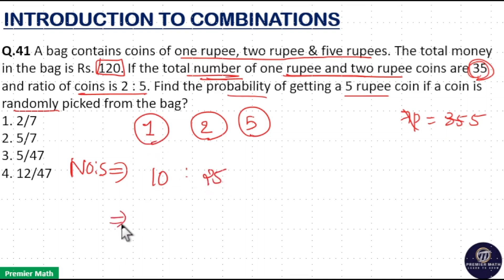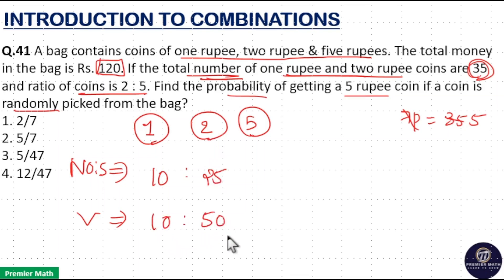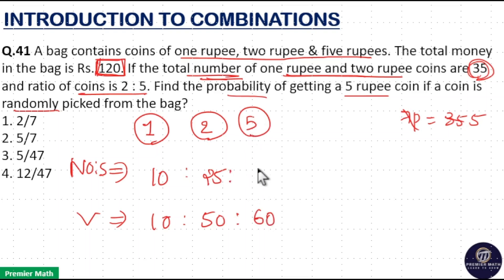Total number of one rupee coins is 10, so total value of one rupee coins is 1 × 10 = ₹10. Total value of two rupee coins is 2 × 25 = ₹50. So 10 plus 50 is ₹60, but there is a total of ₹120 in the bag. So remaining ₹60 is the value of five rupee coins, meaning total number of five rupee coins is 60 ÷ 5 = 12.